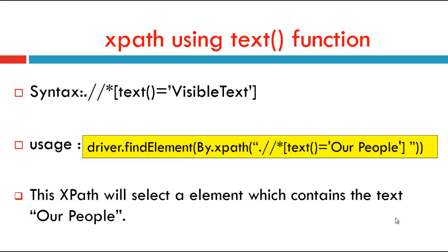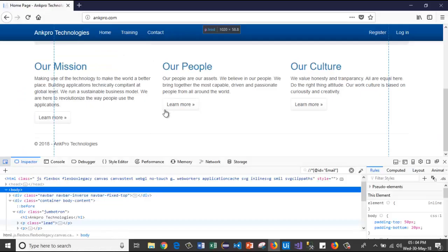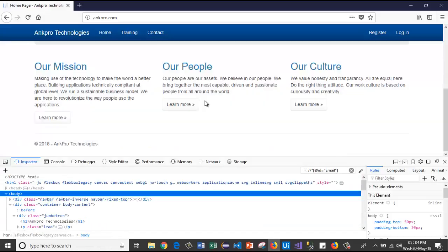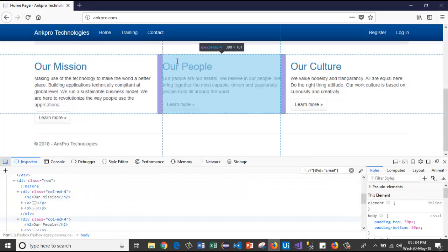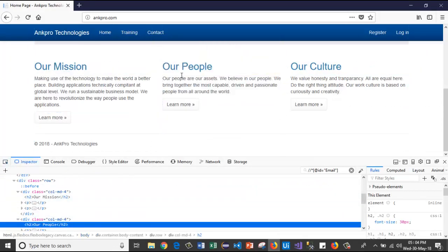XPath using text function. The syntax is: text() is equal to visible text. We will use it like: driver.findElement(By.xpath("//h2[text()='Our People']")). 'Our People' is the visible text here. This XPath will select the element which contains that text.